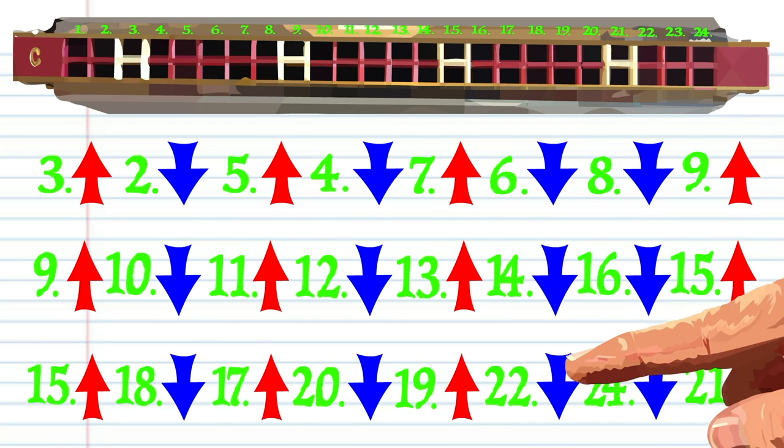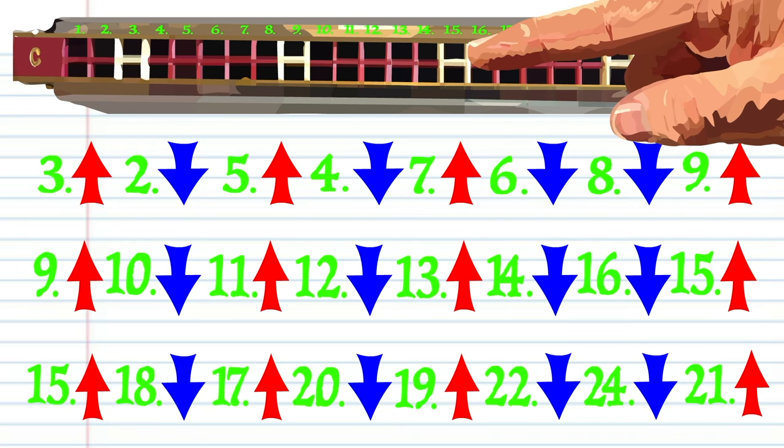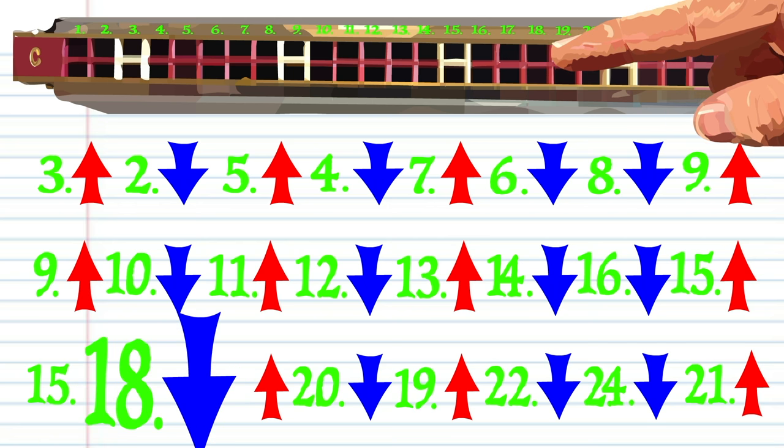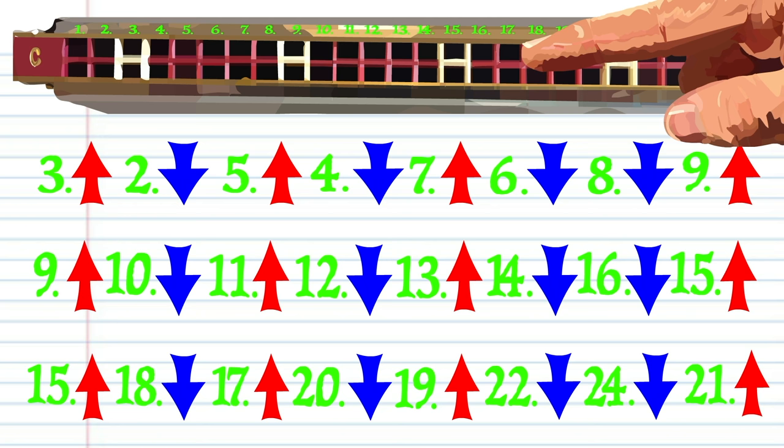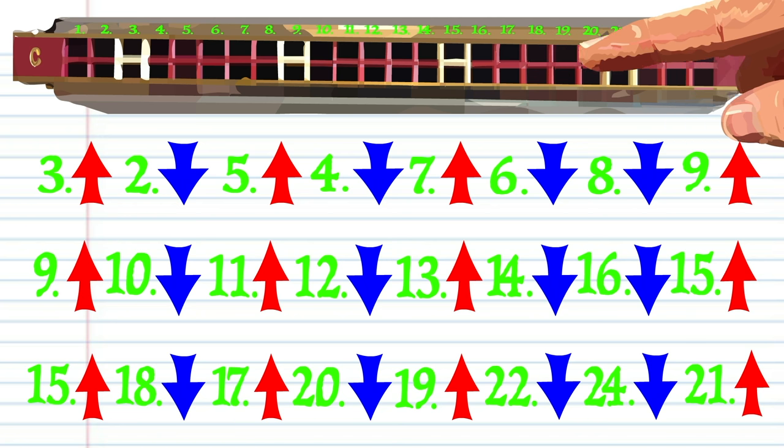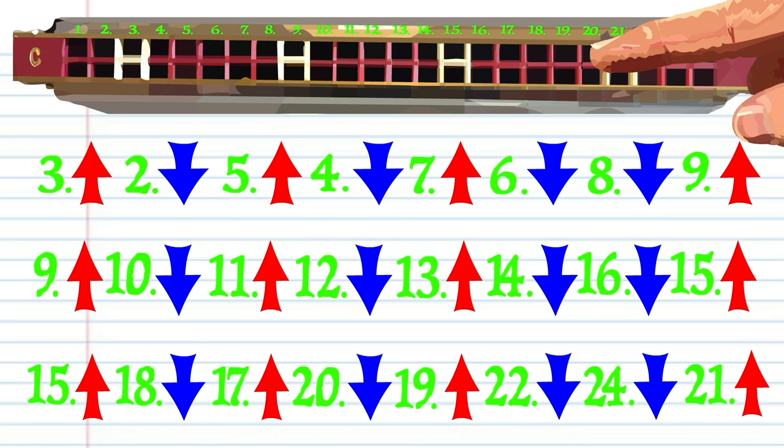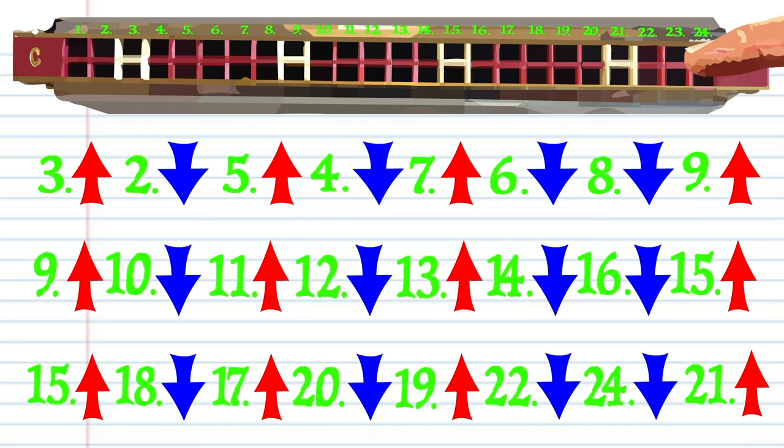And the third octave would look something like this: blow into 15, breathe in through 18, blow into 17, breathe in through 20, blow into 19, breathe in through 22, breathe in through 24, and blow into 21.